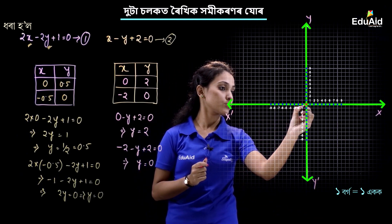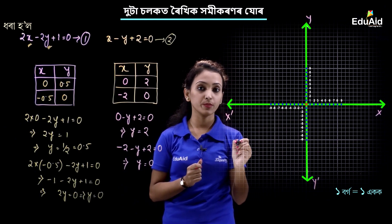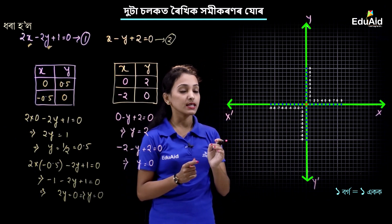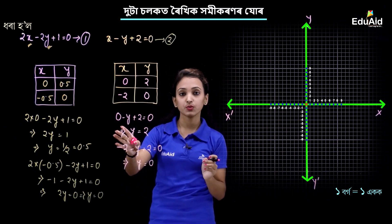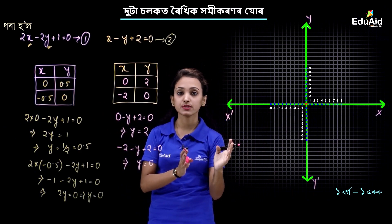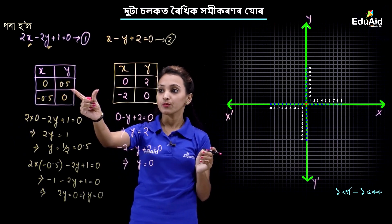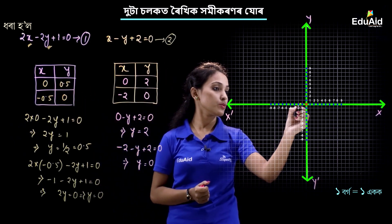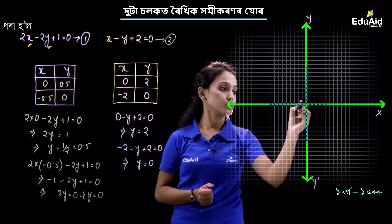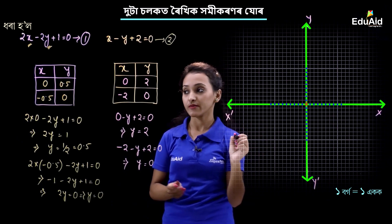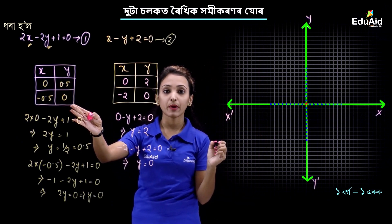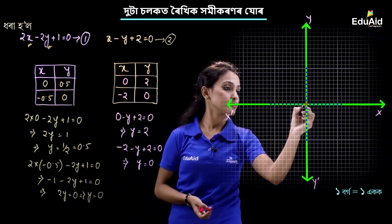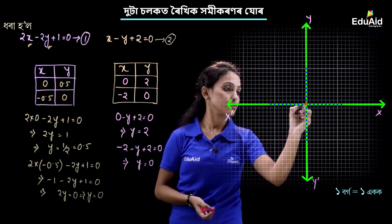The origin (mool baindu) is at zero, zero. These are the points we plot. The point (0.5, ...) and minus 0.5, 0. Then minus 0.5, minus 0.5 is equal to 0.